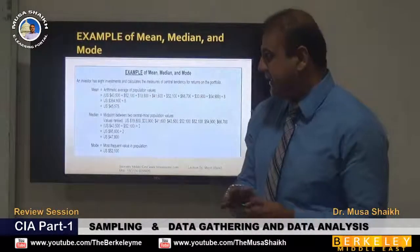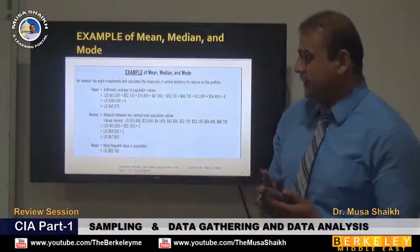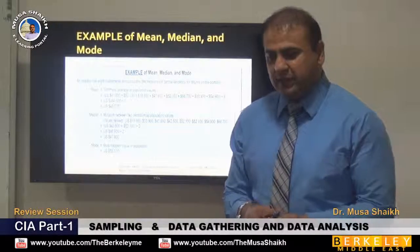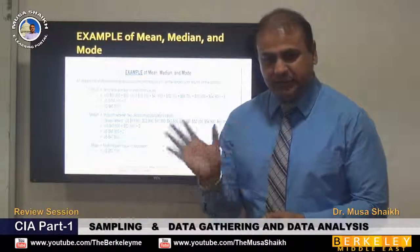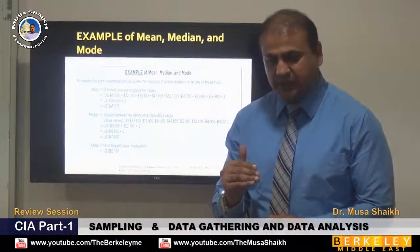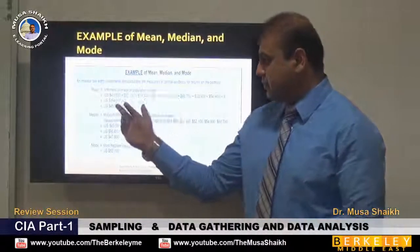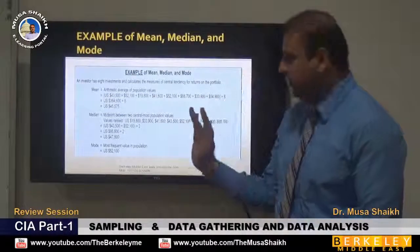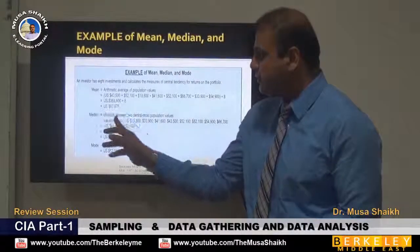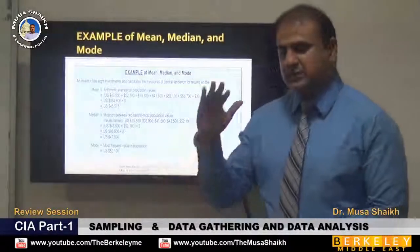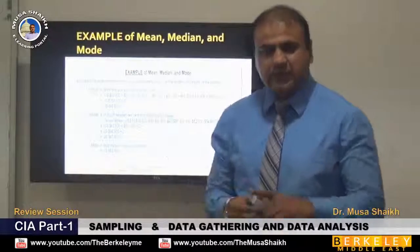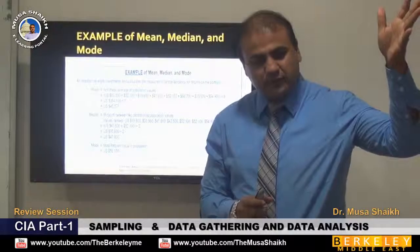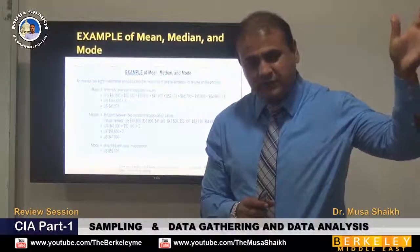An investor has eight investments and we calculate the central tendency. The number of investments is eight, so eight will be the divisor. We list the population of investments — one through eight — and divide by eight. The average investment could be across institutions like HSBC, Barclays, JP Morgan, or other places.